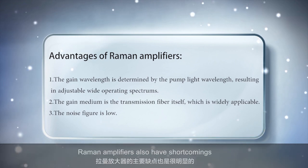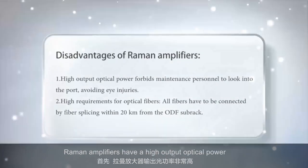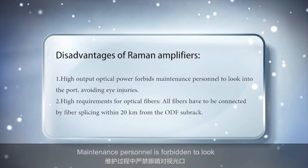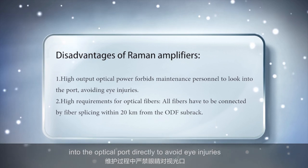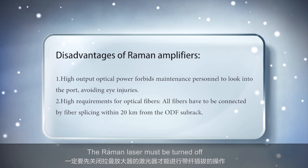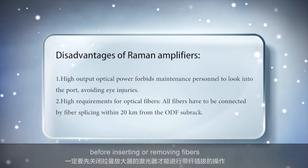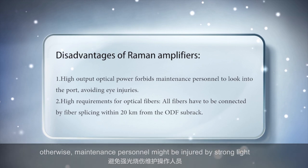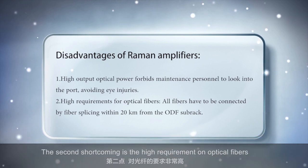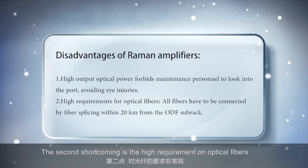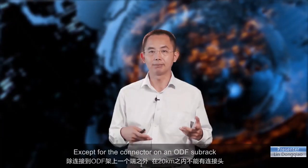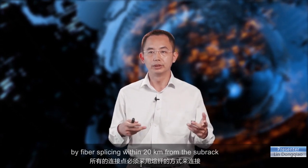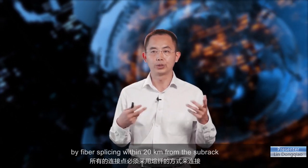Raman amplifiers also have shortcomings. Raman amplifiers have a high output optical power — maintenance personnel are forbidden to look into the optical port directly to avoid eye injuries. The Raman laser must be turned off before inserting or removing fibers; otherwise, maintenance personnel might be injured by strong light. The second shortcoming is the high requirement on optical fibers: except for the connector on an ODF subrack, all fibers have to be connected by fiber splicing within 20 km from the subrack.